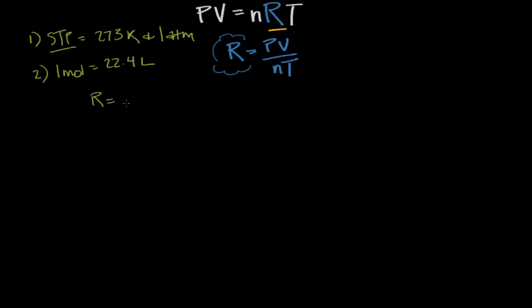So let's start with R equals PV over nT. For our conditions, we're going to talk about 1 mole at standard temperature and pressure. For our pressure, we have 1 atmosphere. Then we have 1 mole, and we know that 1 mole is 22.4 liters. So that's our volume. At standard temperature and pressure, we're talking about 273 Kelvin. This should equal R.